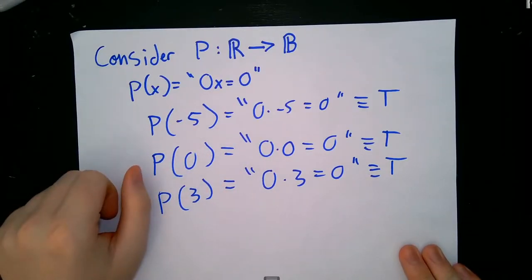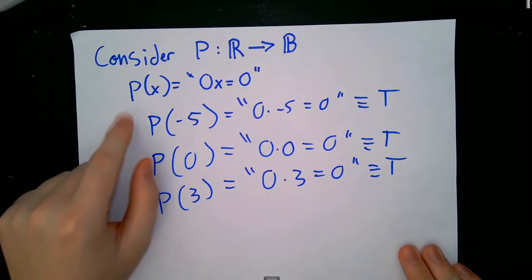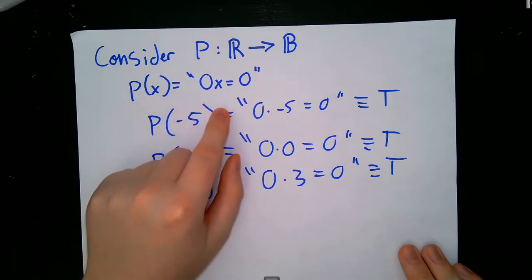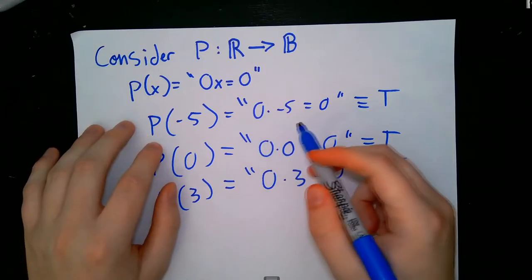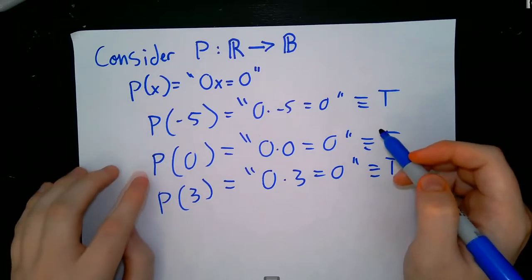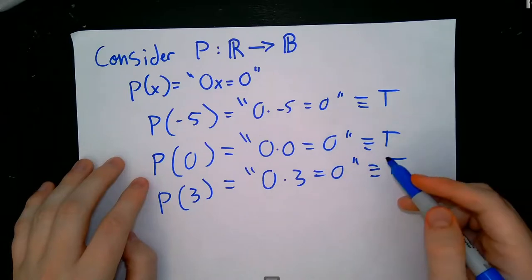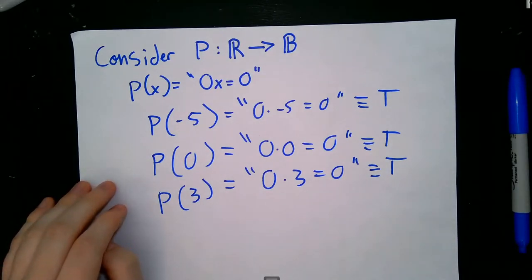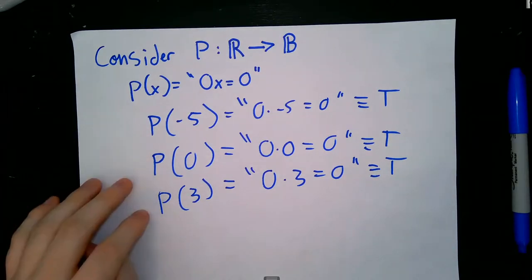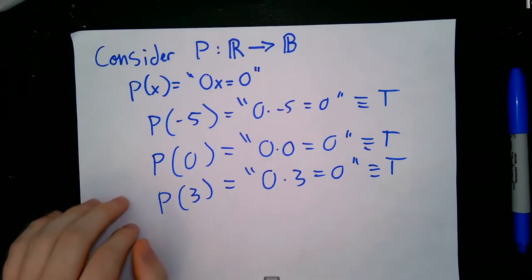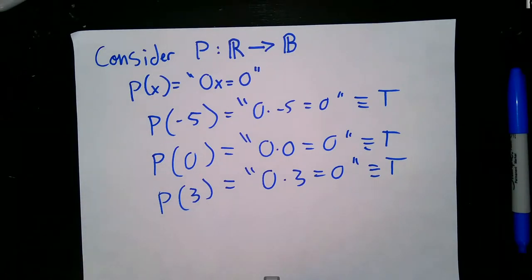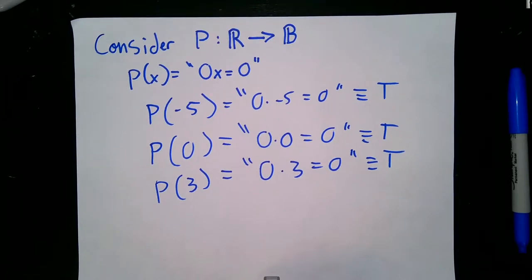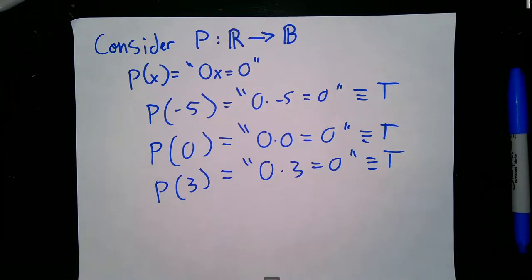Here's an example predicate that takes in real numbers and gives out propositions. This predicate p is defined by p(x) equals 0 times x equals 0. So p(-5) is 0 times negative 5 equals 0, which is a true proposition. p(0) is 0 times 0 equals 0, also true. And p(3): 0 times 3 equals 0, also true. By the properties of multiplying any real number by 0, no matter what real number we pass in, it's always going to be true — this predicate maps every element in the domain to a true proposition. This will be really helpful for talking about whether some predicates bring every element of their domain to true, or whether at least one input gives true.